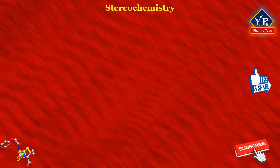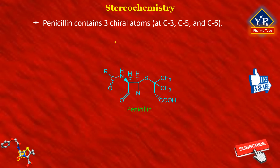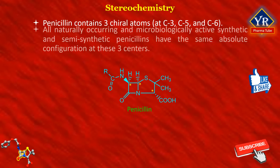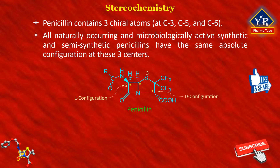Stereochemistry of Penicillins. The penicillin molecule contains three chiral carbon atoms at C3, C5, and C6, as shown in the structure. All the naturally occurring and microbiologically active synthetic and semi-synthetic penicillins have the same absolute configuration at these three centers. The carbon atom bearing the acylamino group, that is C6, has the L configuration, whereas the carbon to which the carboxyl group is attached, that is C3, has the D configuration.